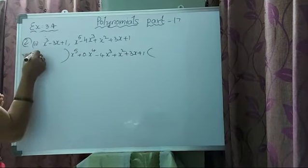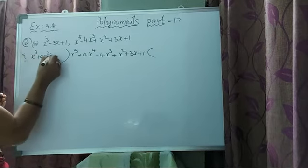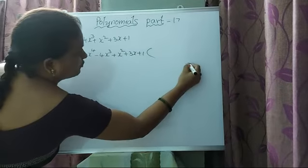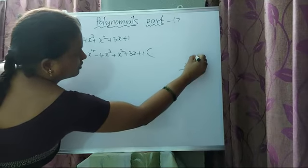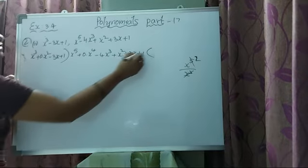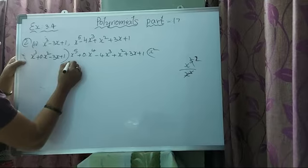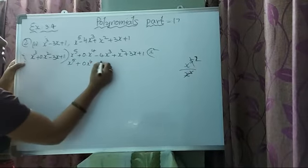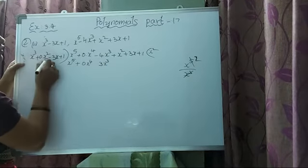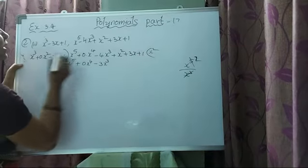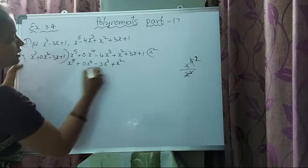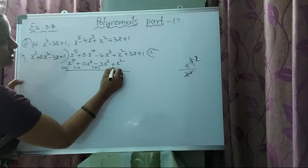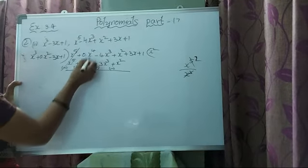For the divisor, x square is missing, so write x cube plus 0 times x square minus 3x plus 1. Divide the first term of the dividend by the first term of the divisor: x power 5 by x cube. 5 minus 3 is 2, so the result is x square. x square into x cube gives x power 5. Change symbols: minus becomes plus. This term gets cancelled.